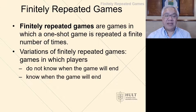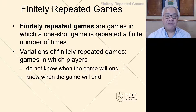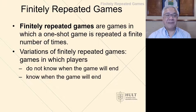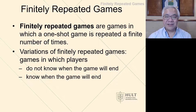If we look at finite repeated games, that's where we know there's an end to it. There are variations on finite because you could know it's going to end — in a football game, you know there are four quarters and you know there's the end, so that affects your strategy. But what if you don't know the end? You just know that at some point it's going to end, so you're playing today not knowing if it's your last or not.